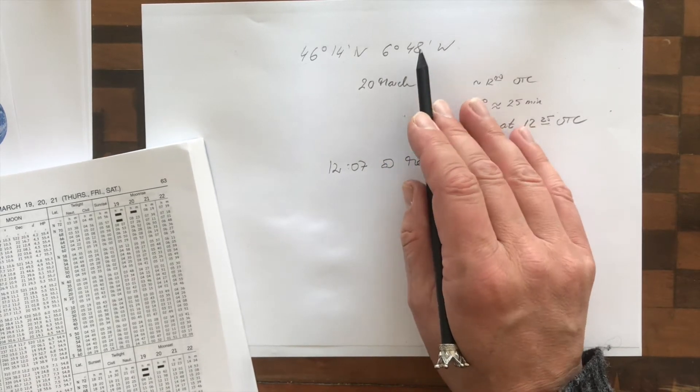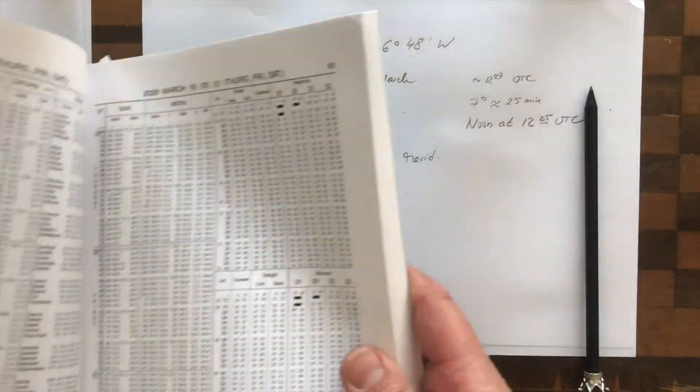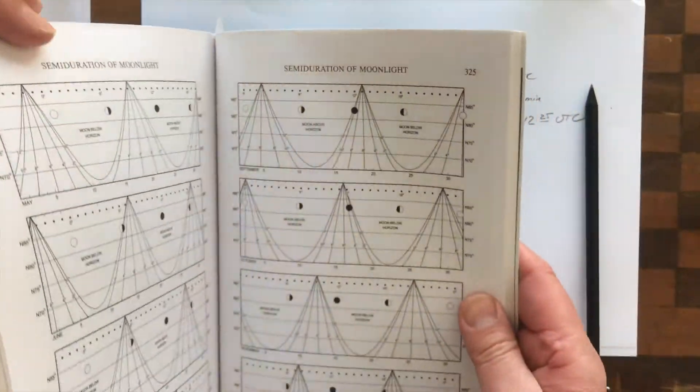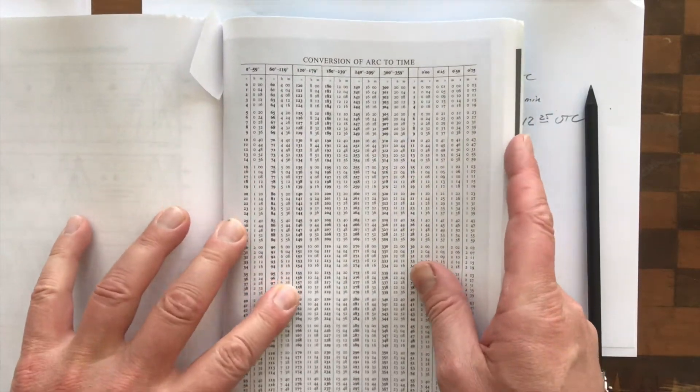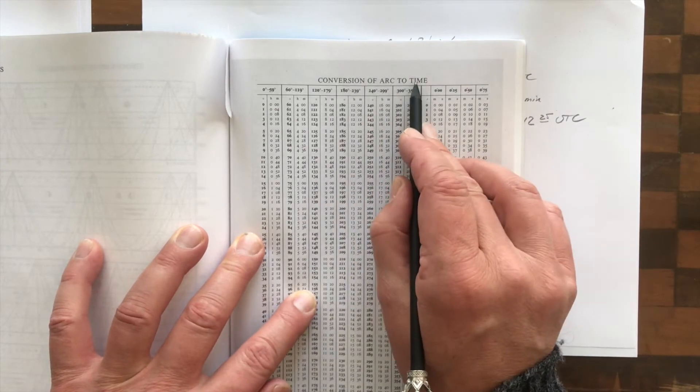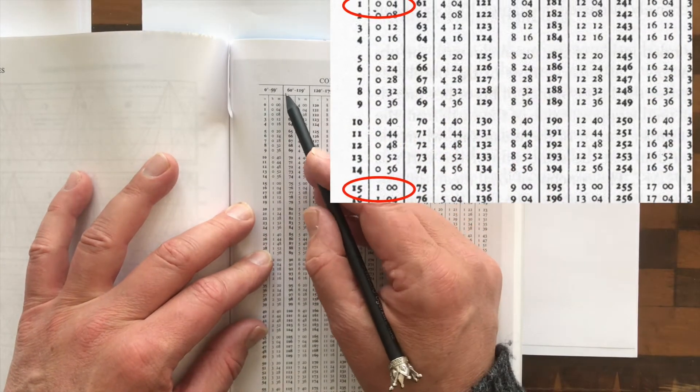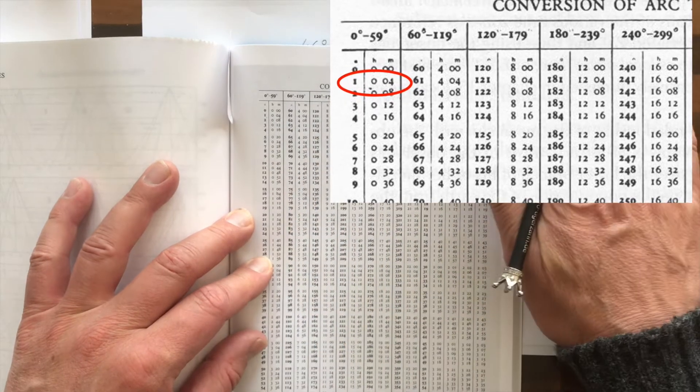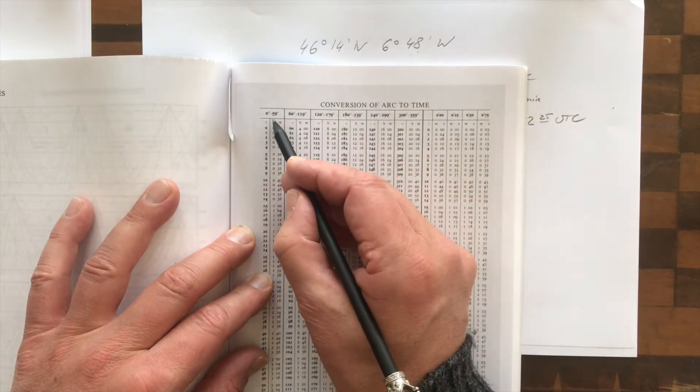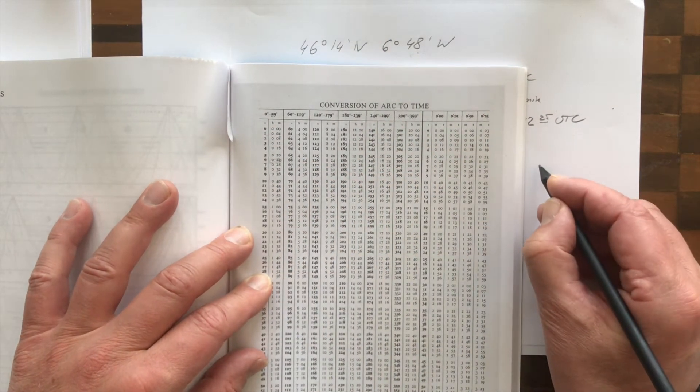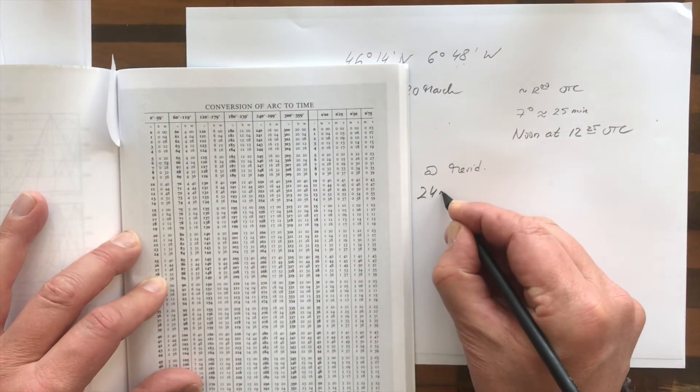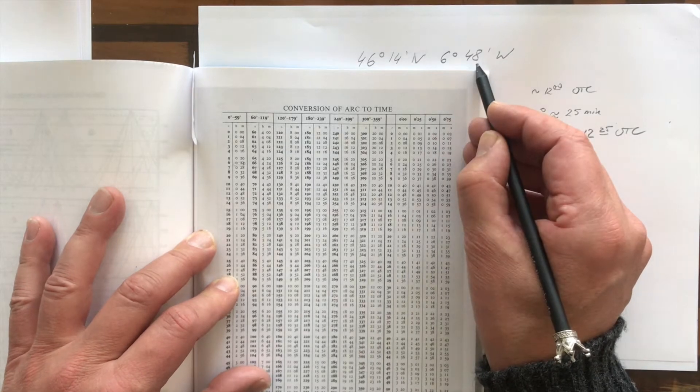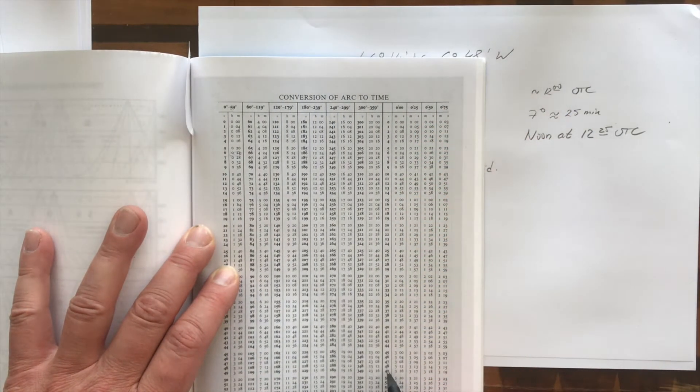Now 6 degrees and 48 minutes, how long does it take for the sun? I said approximately half an hour. We have here in the nautical almanac, arc to time. This will be one of your favorite pages. We can recognize here that 15 degrees takes 1 hour and 1 degree takes 4 minutes. So 6 degrees is 24 minutes. These 48 minutes, we can look here.